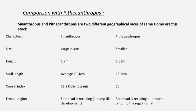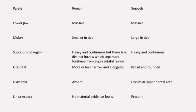Some of these variations are size, height, and skull length. The size of Pithecanthropus is smaller than Sinanthropus. The height of Sinanthropus is 1.7 m in comparison to Pithecanthropus height of 1.5 m. The skull length of Sinanthropus is 19.4 cm whereas Pithecanthropus skull length is 18.5 cm. The cranial index of Sinanthropus is 72.2 dolichocranial whereas in Pithecanthropus it is 70 dolichocranial.